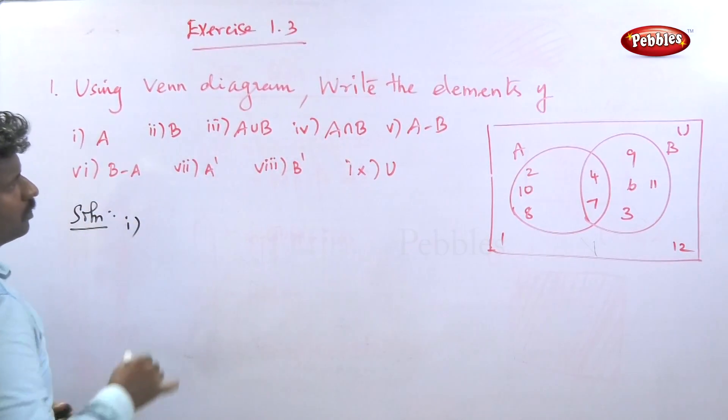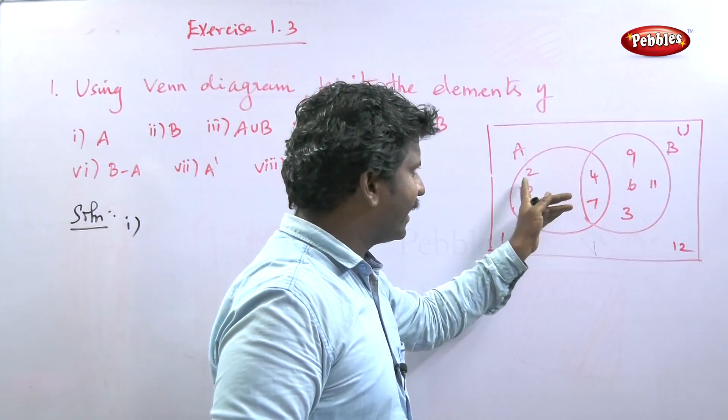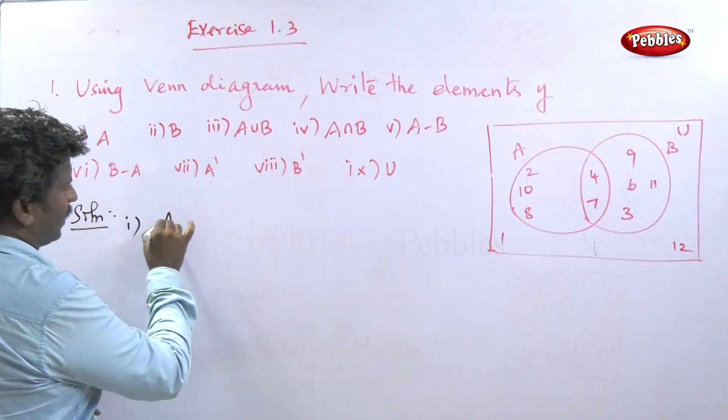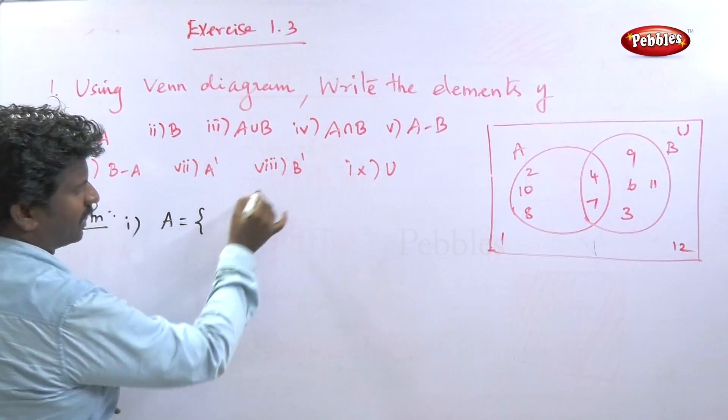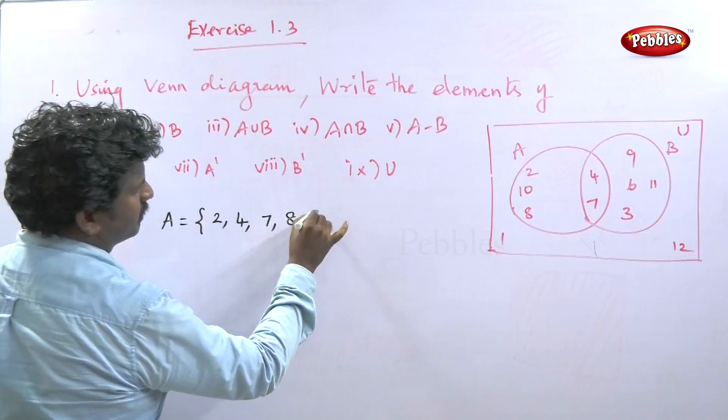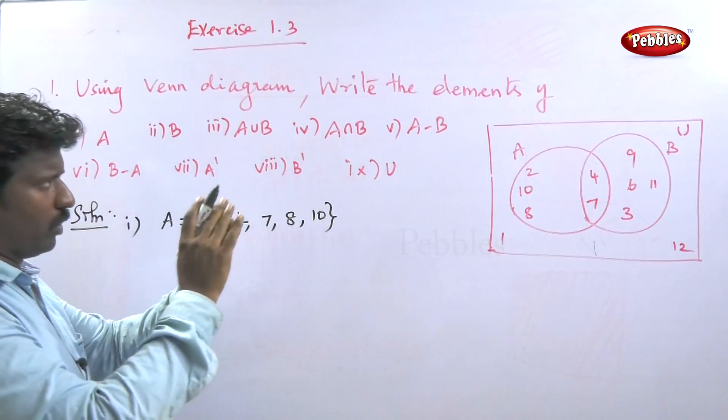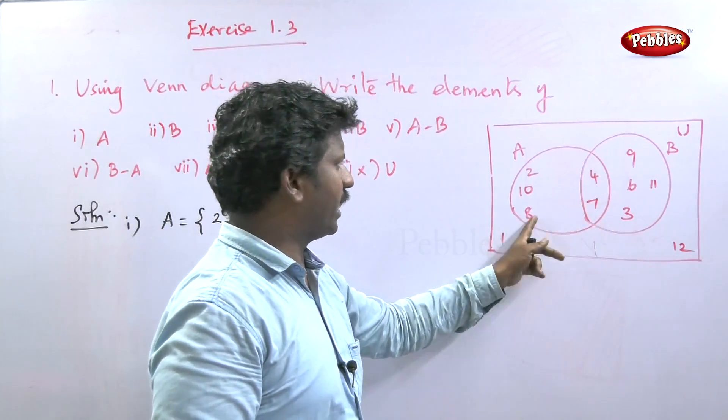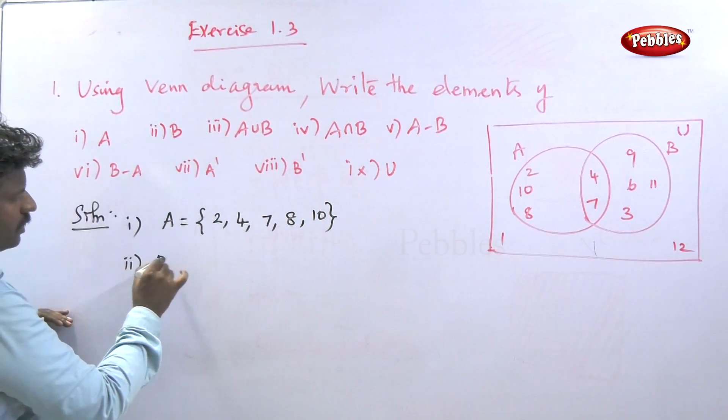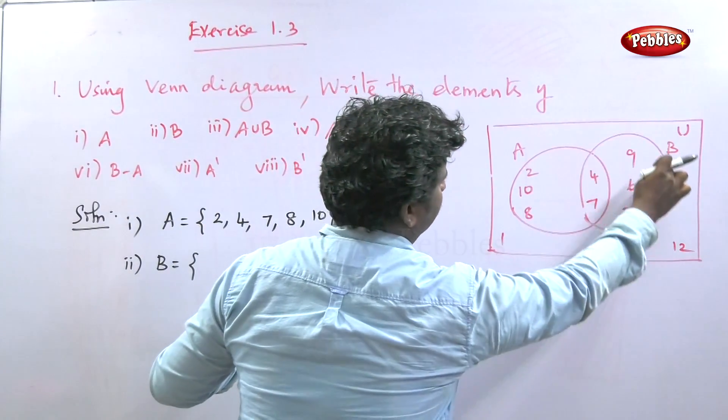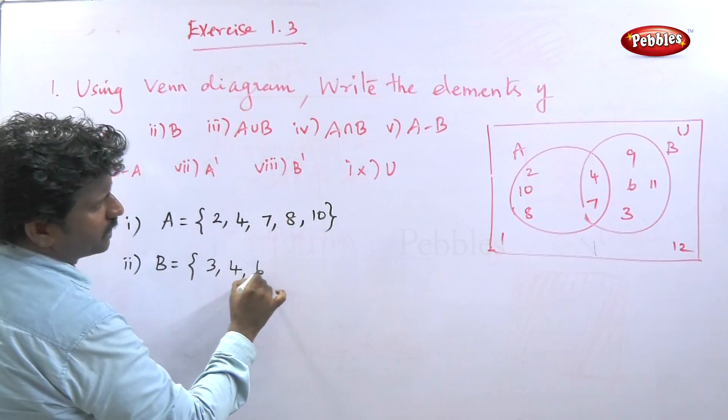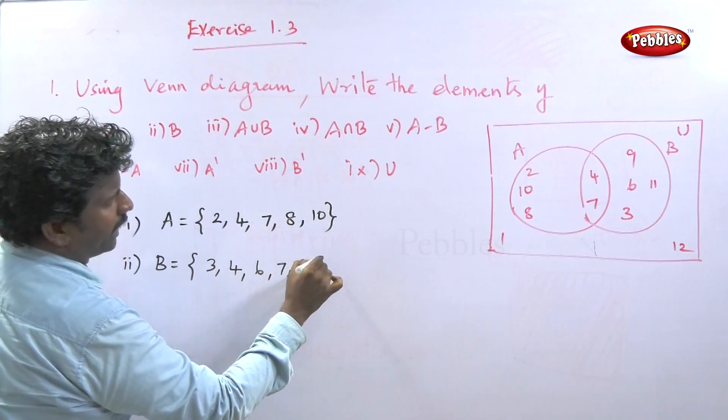The first question is set A. See the diagram, the A circle. Set A is equal to, in ascending order, 2, 4, 7, 8, 10. This is set A. The second one, set B, this whole circle is set B. What is that? 3, 4, 6, 7, 9, 11.